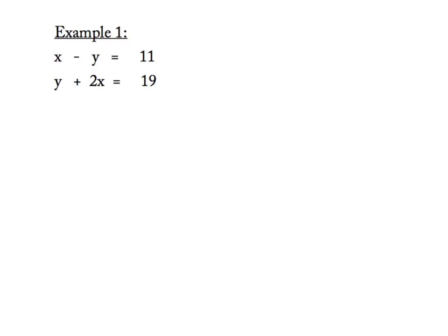So the first thing that we're going to do is we are going to rewrite. Our first equation looks like it's in the proper order. We have the x term first, the y term second, the equal sign, and then our constant term. So we're going to leave that guy just exactly the way he is. That second equation we are going to rearrange so that our terms match our first equation. So we'll write that as 2x plus y equals 19.